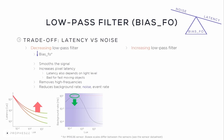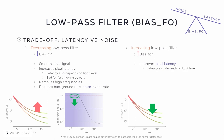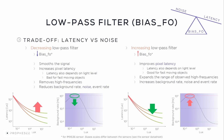Increasing the low-pass filter means increasing bias FO for the IMX636 sensor, and it will improve pixel latency. Latency also depends on light level, and low latency can be needed for fast-moving objects. This expands the range of observed high frequencies, but also increases background rate, noise, and event rate. As event rate increases when increasing bias FO, we suggest increasing the high-pass filter too to remove noise and decrease the overall event rate.